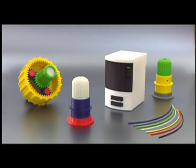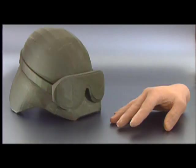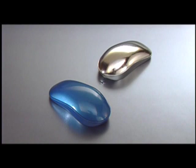Dimension ABS comes in 7 standard colors. Custom colors are available. Dimension's durable ABS can be sanded, painted, even chrome plated.